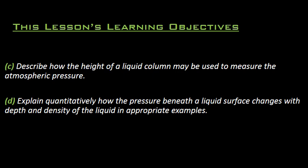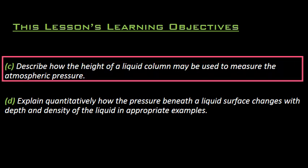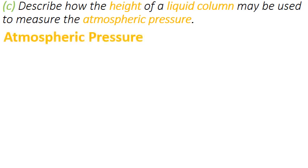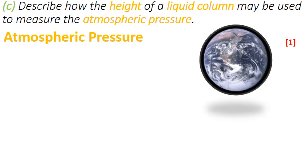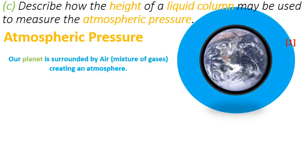Now coming to the second learning outcome, which is the prior one, learning objective C. This is about using a liquid column's height to measure the atmospheric pressure. Before we start talking about the liquid column itself, we need to understand what atmosphere is. This is our globe of Earth, our mother planet. We are surrounded by air, a mixture of gases. This which surrounds us creates an atmosphere.